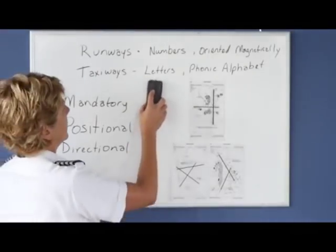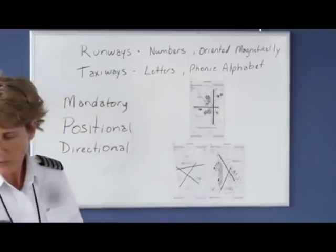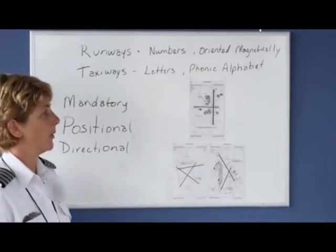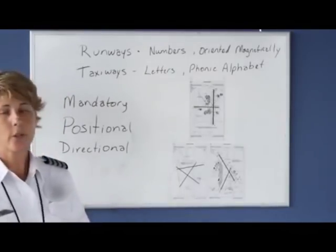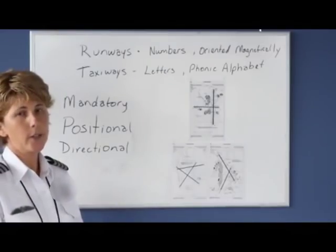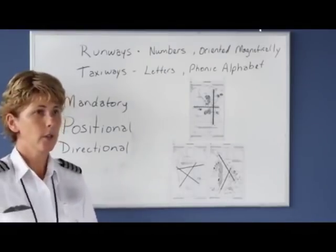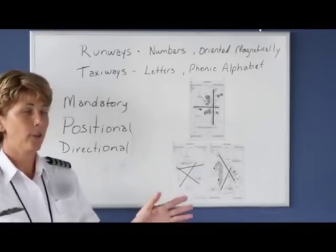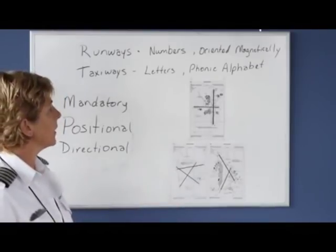Taxiways, on the other hand, are given letters, and we use the phonetic alphabet when we're talking about those. So the controllers may say taxi to runway 1 niner via right on Juliet, left on alpha. So you should look for the J sign, and then look for the A sign, as you're taxiing along.